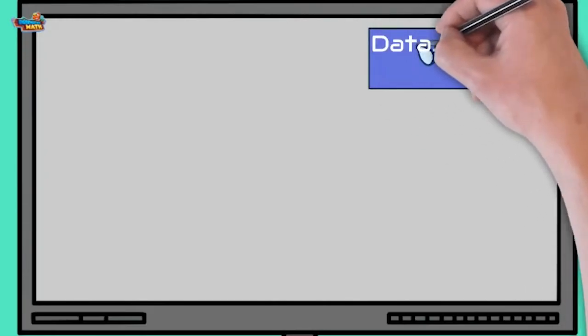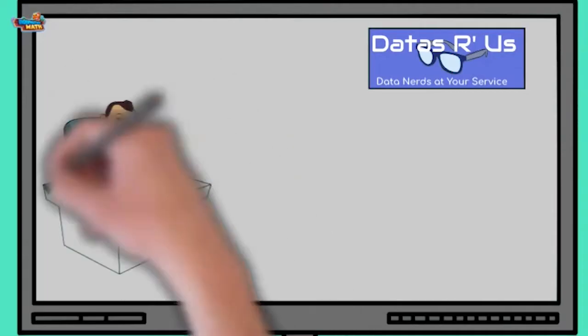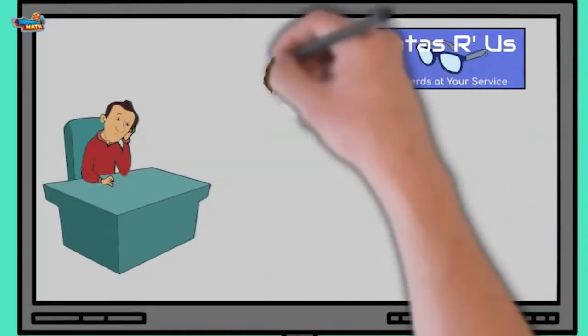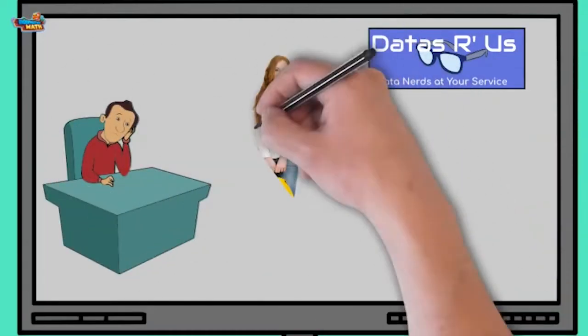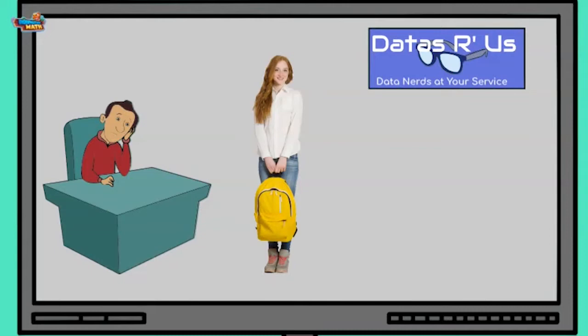Welcome to Data's R Us. How can I help you? I am a new research student and my professor handed over this set of dots showing information about Seattle's monthly rainfall.